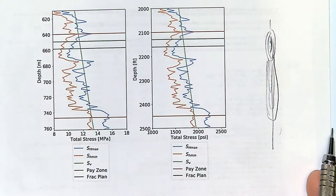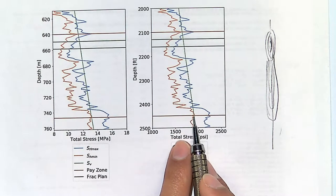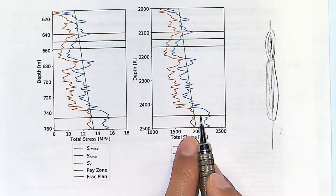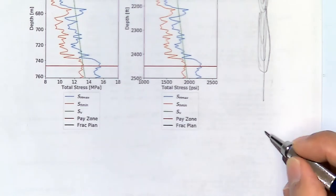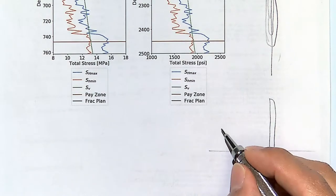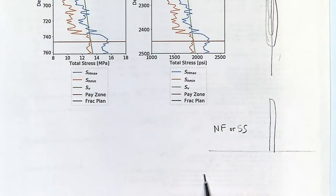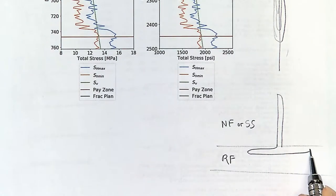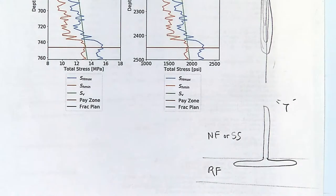What happens if the stress at that point is actually higher than the vertical stress and the fracture continues to propagate? In that case you will see a hydraulic fracture propagating downward — if it's in a normal faulting or strike-slip regime it will be vertical — but if it gets into a reverse faulting regime it will turn and start propagating horizontally. This is called a T-shaped fracture.